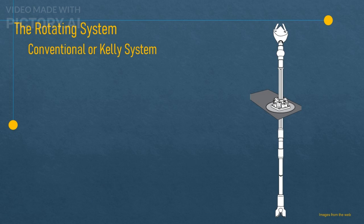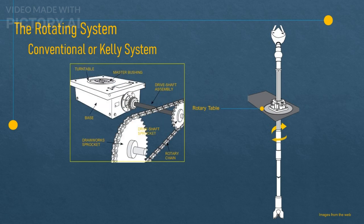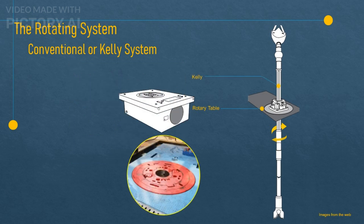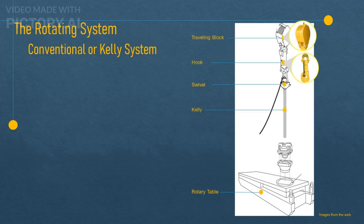The conventional or Kelly system has been around since rotary rigs first came into play. It uses a rotary table assembly at the rig floor to create the turning motion. The rotary table assembly consists of a special chain and shaft that power a circular device called the turntable. The rotary table has a hole in the center where a square or hexagonal pipe called the Kelly fits in. The Kelly is attached to the drill string at one end and to a device called the swivel at the other end. The swivel hangs from the hook and the traveling block, which are part of the hoisting system.